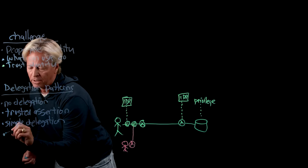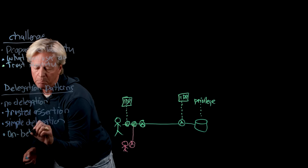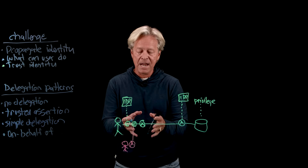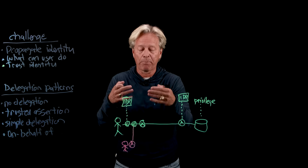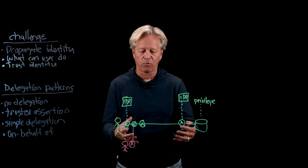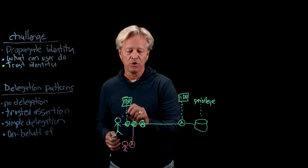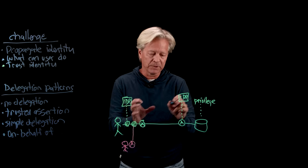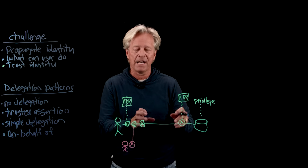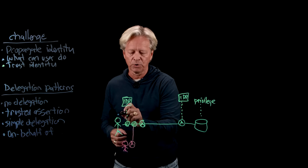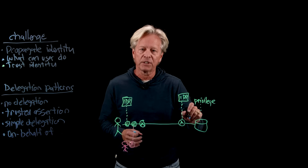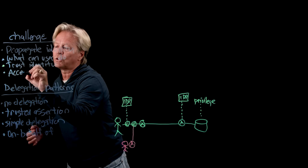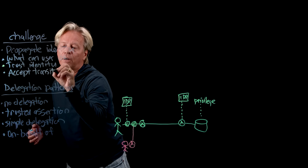I'm going to introduce another delegation pattern: on behalf of delegation. This gets into a model where we have an agent and a user, both having identities, tokens, privilege, and rights. The agent is going to work on behalf of the user, and the user trusts that agent — it knows who this agent is and trusts it to act on its behalf. But what happens if we have multiple agents? In agentic flows, it's very dynamic and agents get introduced. How does the user then know to trust all the agents throughout the system?